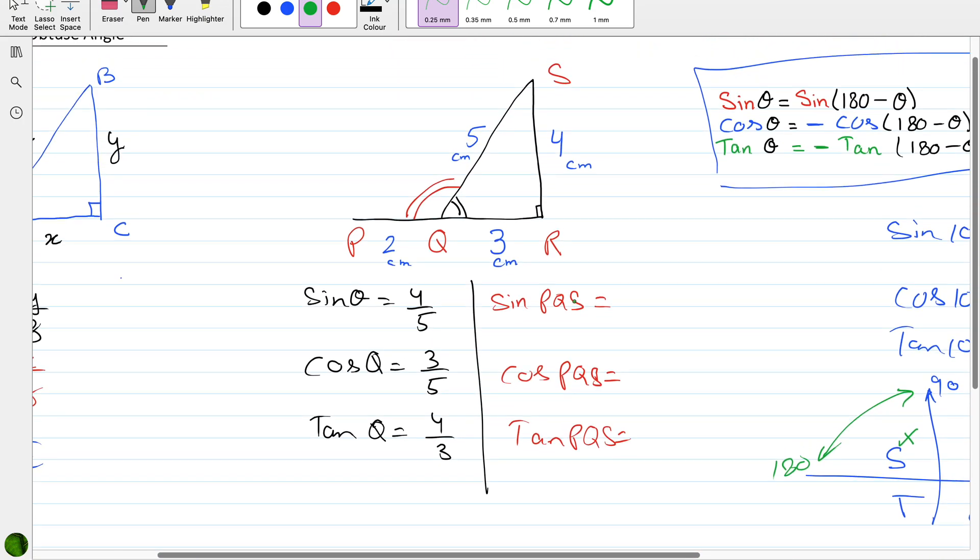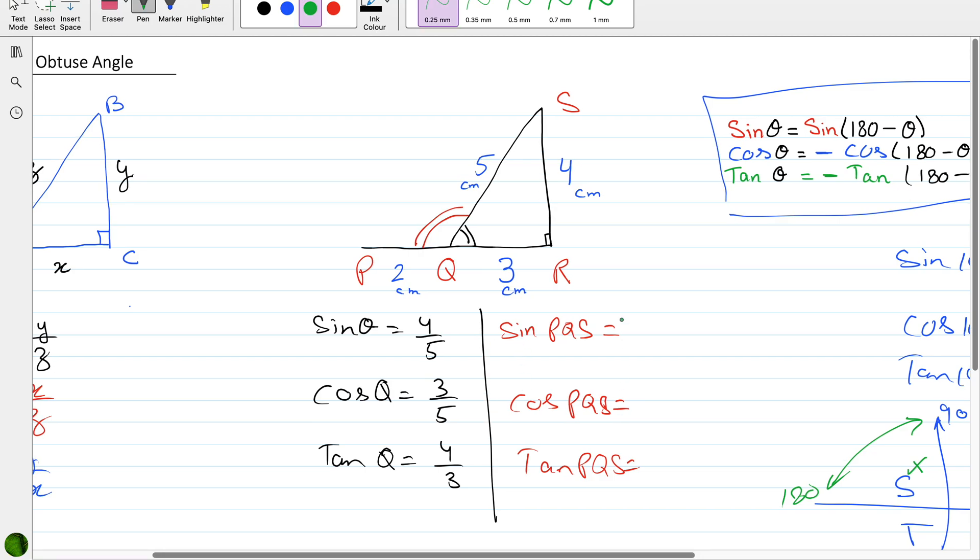Coming back to this question, if the examiner is asking about sine PQS, this obtuse angle marked in red, you cannot answer this. But yes, you can come on the other side of this angle because it is a sum of 180, and you can answer sine Q, that is SQR, sine SQR, which is 4 by 5.